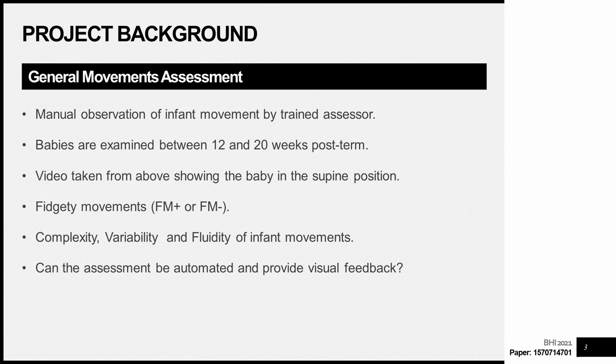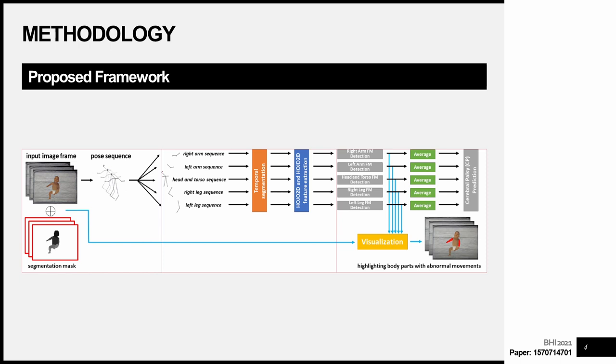In this paper we're looking to address whether the assessment could be automated and whether we could also provide visual feedback to clinicians as part of this process. In this slide we can see an overview of our proposed framework. Going from left to right: we take input image frames from our selected dataset, extract the infant's pose per frame, then separate this into individual body part sequences. These body part sequences are then segmented temporally into 100-frame segments before features are extracted for classification. A key part of our framework is the ability to provide a visualisation highlighting body parts showing abnormal movements.